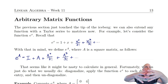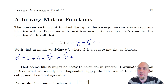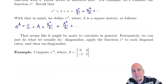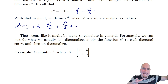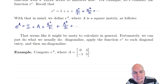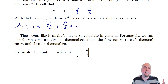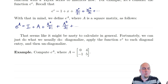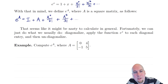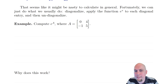This raises a problem though — how do we actually compute something like this? We can't actually add up infinitely many terms. Fortunately, diagonalization comes to the rescue. All you have to do is apply the function to the diagonal piece in a diagonalization, just like we did with weird matrix powers. Let's go through a quick example before doing a bit more justification for why this works.